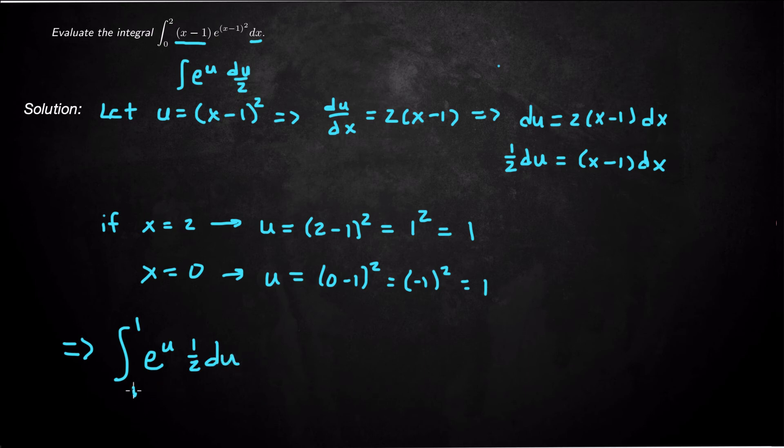An integral where the lower bound equals the upper bound has to be 0. You can work it out: ½e^u from 1 to 1 gives ½(e - e) = 0.